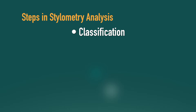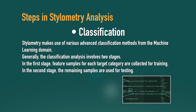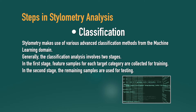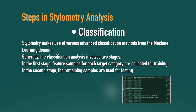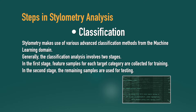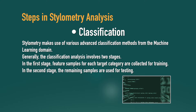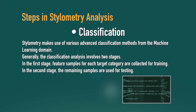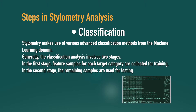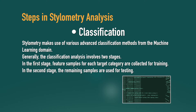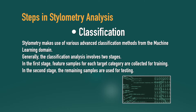Now comes the final part — classification. Stylometry makes use of various advanced classification methods, from the machine learning domain to advanced deep learning methods. Generally, the classification analysis involves two stages: in the first stage, feature samples collected from each target category are trained, and in the second stage, the remaining samples are subject to testing.